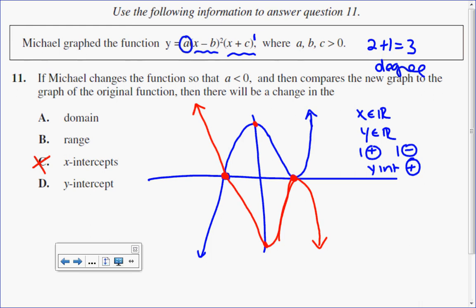So what changes, not the domain and range, because the arms extend infinitely in both directions, covering all x and y values, the thing that does change is the y-intercept. In our case, it went from being positive to being negative. So the answer to number 11 is D.